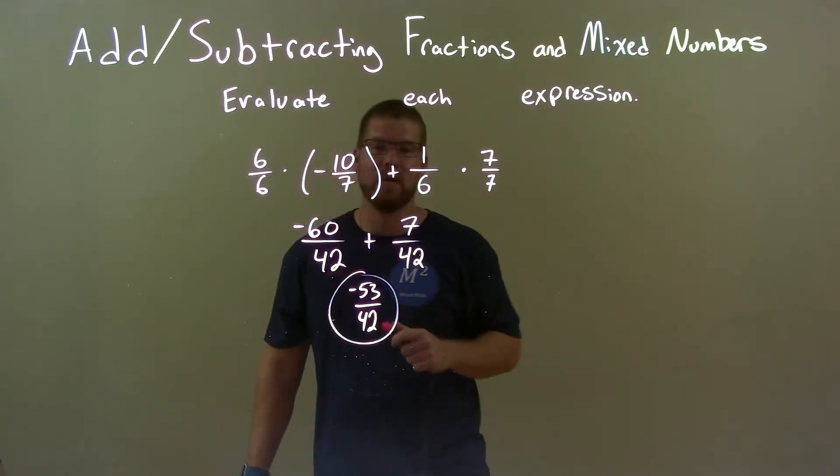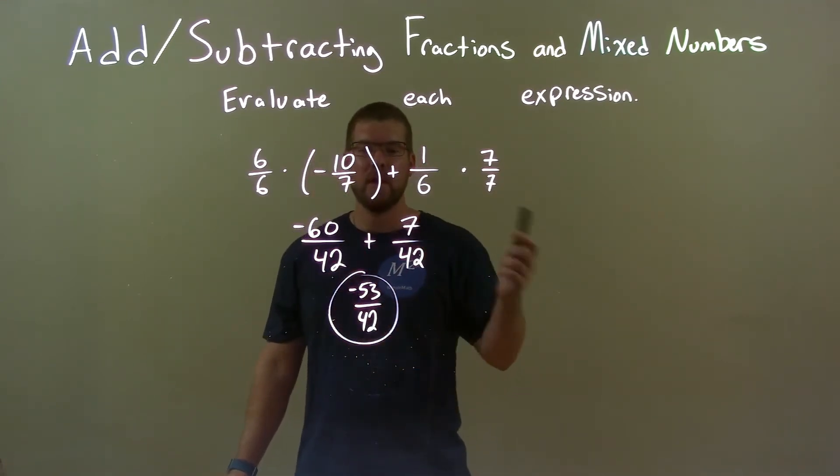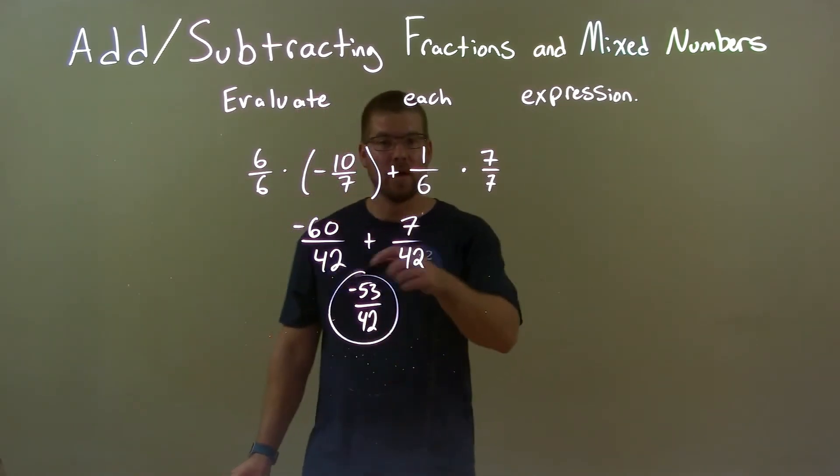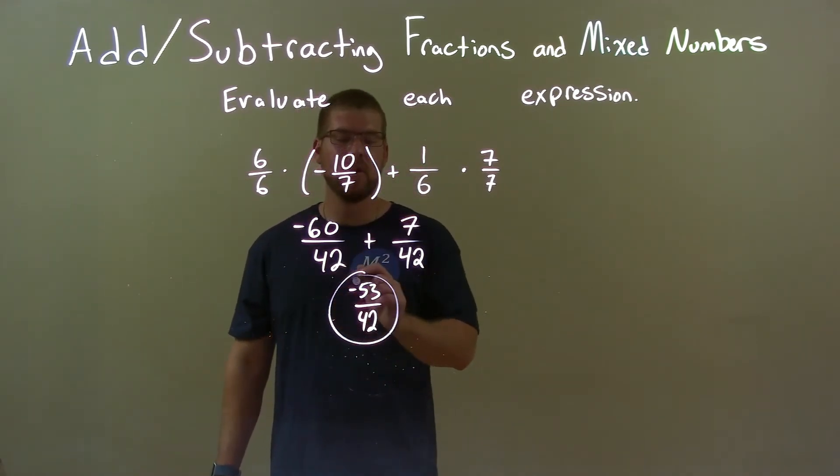Now we have the same base. We just add the numerator, which becomes negative 53, bring down the 42, and so we have our final answer here, negative 53 over 42.